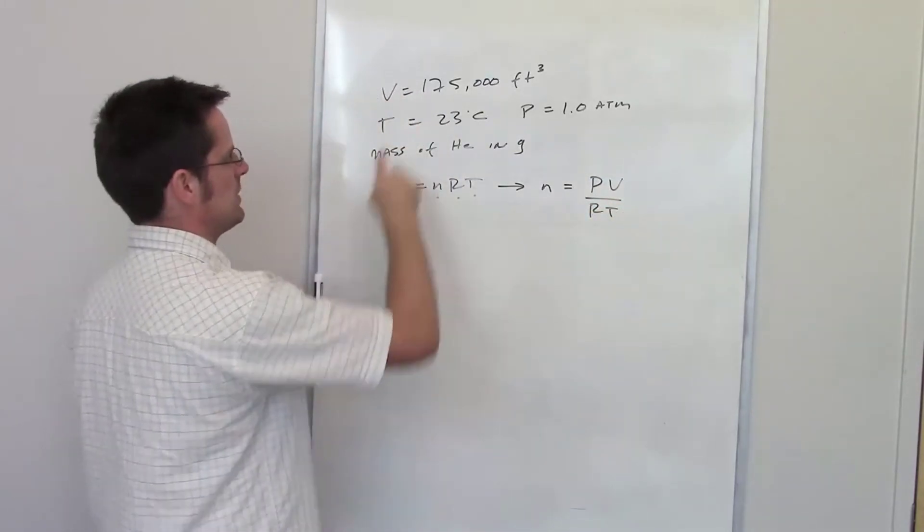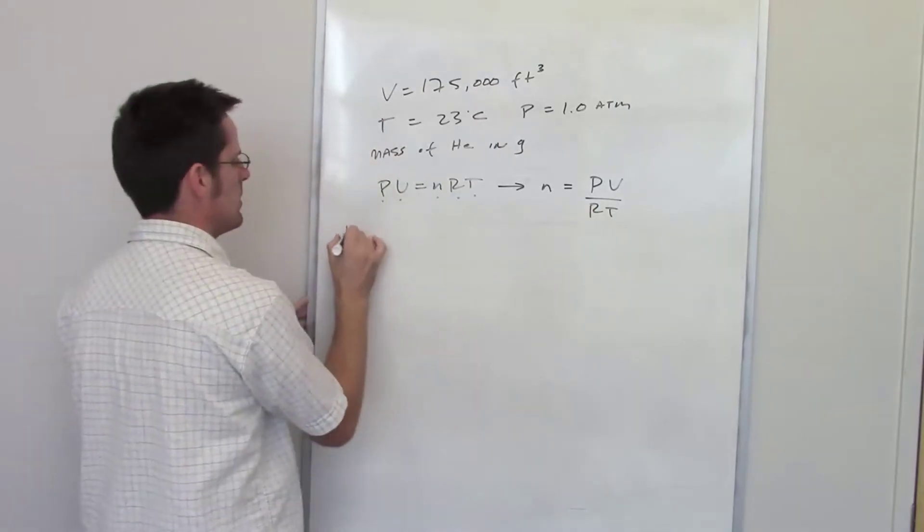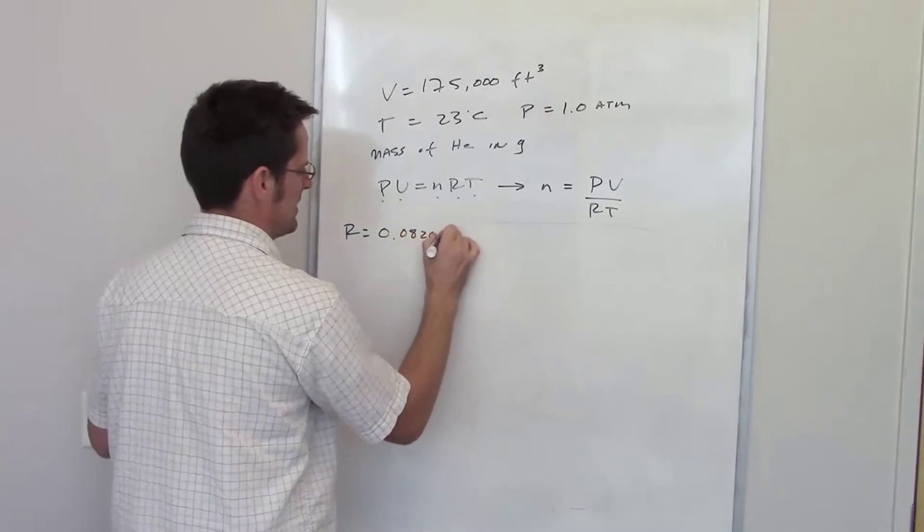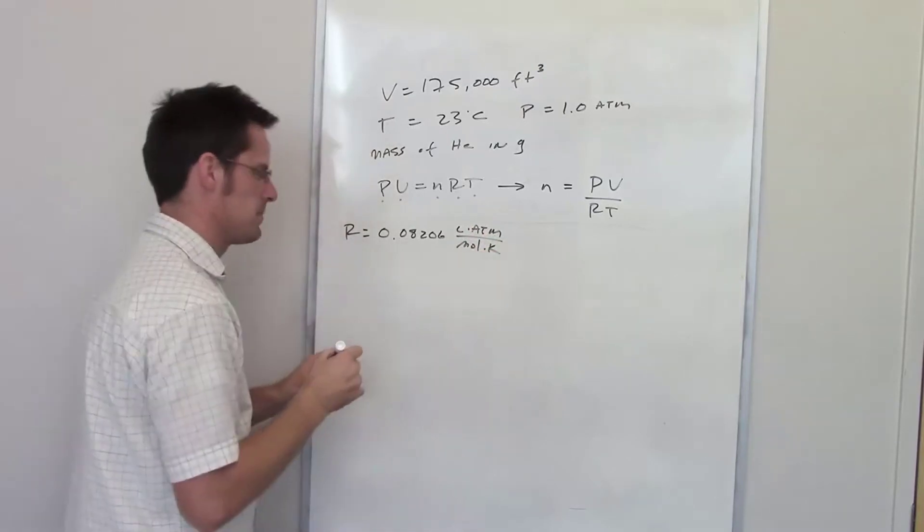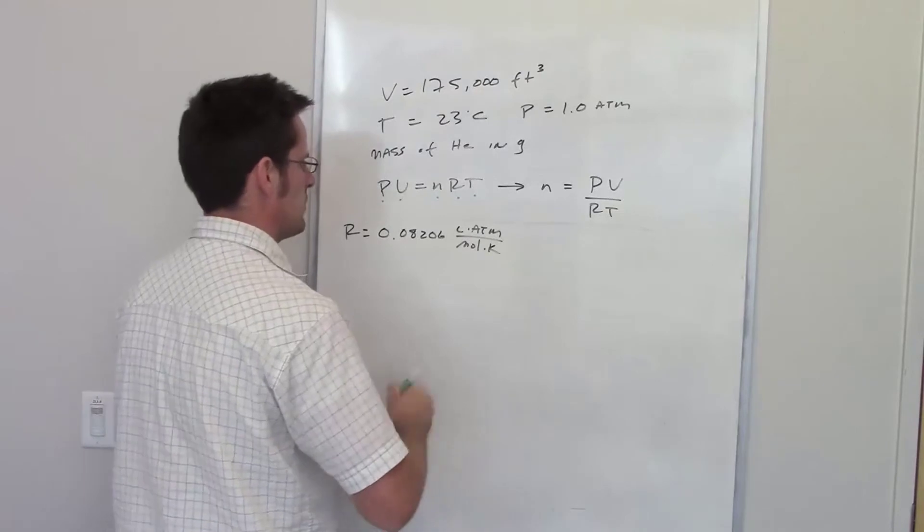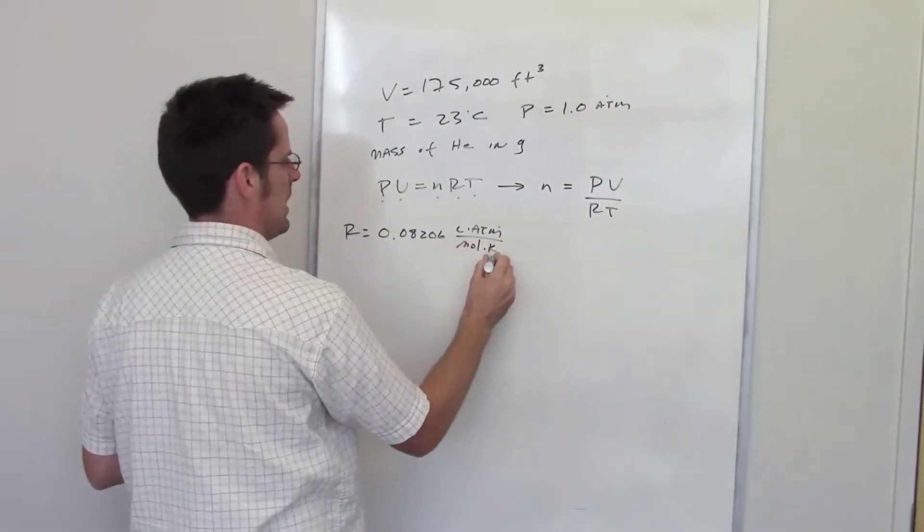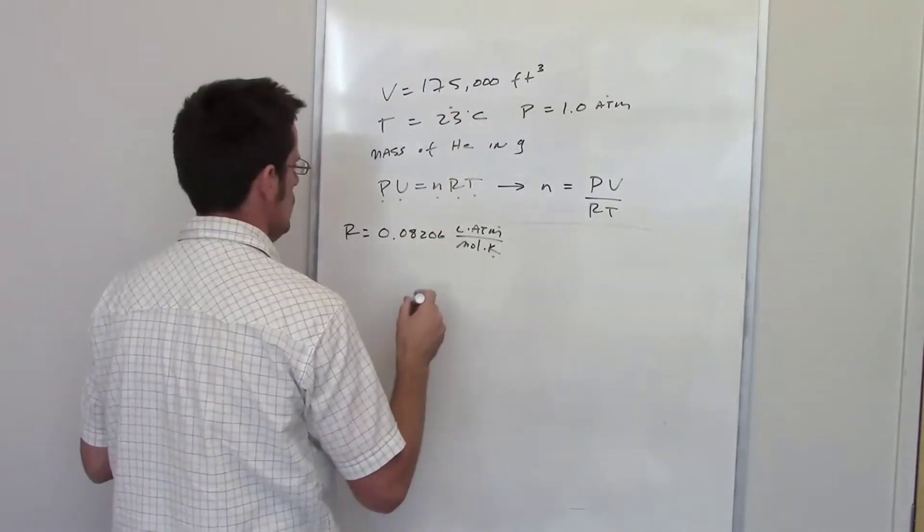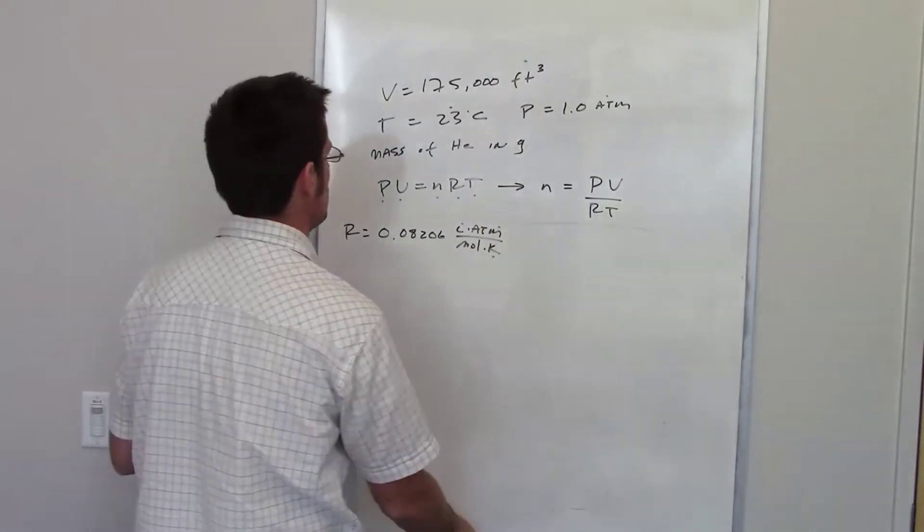Now, I've got all of my different items here minus my ideal gas constant. So I always use my favorite ideal gas constant, 0.08206 liter atmospheres per mole kelvin. Now I want to make sure that all my units match. So I've got atmospheres in my ideal gas constant. I've got atmospheres there. I've got kelvins in my ideal gas constant. I've got degrees Celsius there. I've got liters in my ideal gas constant and I've got cubic feet up there. So I'm going to have to do some conversions.